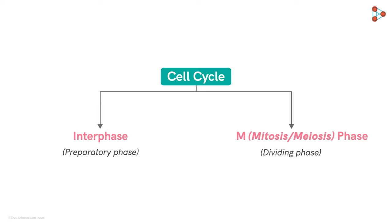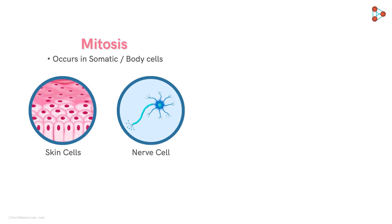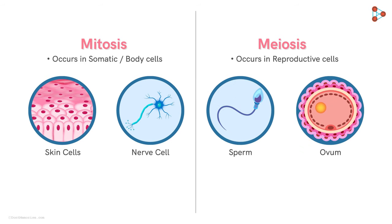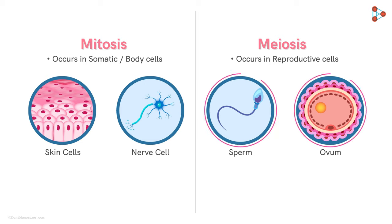The first difference between the two processes: mitosis occurs in somatic or body cells, while meiosis occurs exclusively in the reproductive cells. Mitosis, occurring irrespective of whether the individual is male or female, gives rise to somatic cells which are exact copies of the parent cells. Meiosis, on the other hand, occurs in males and females, giving rise to haploid sperm and egg cells respectively.